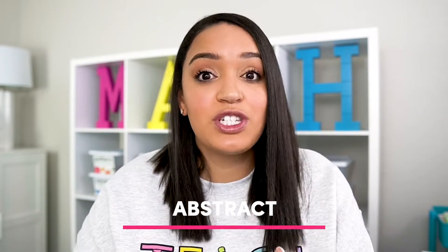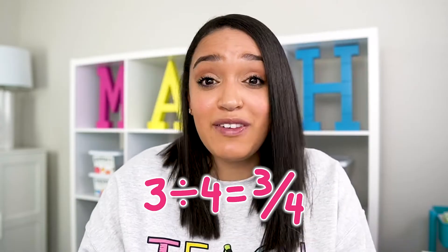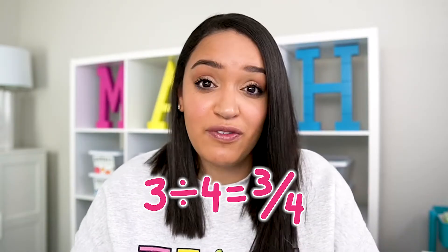And lastly, we get to the abstract phase, which is the third phase in the CRA model. Here they are just using numbers and symbols — showing that three divided by four is three fourths.